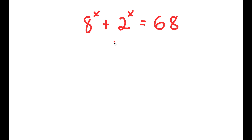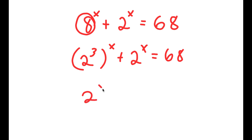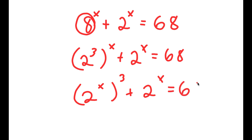In this problem, I have 8 to the power of x plus 2 to the power of x is equal to 68. I'm going to rewrite 8 as 2 to the power of 3, so now I have 2 to the power of 3 to the power of x, plus 2 to the power of x, equals 68. I can switch the places of the 3 and x, giving 2 to the power of x to the power of 3, plus 2 to the power of x, equals 68.